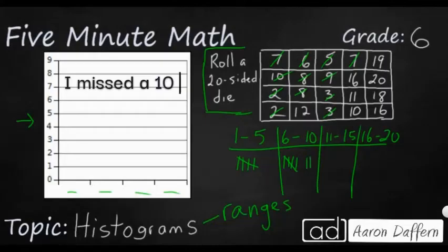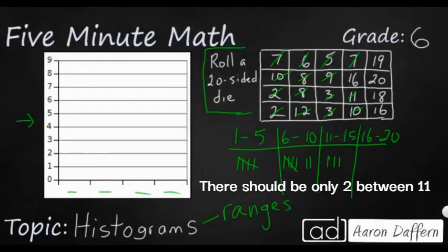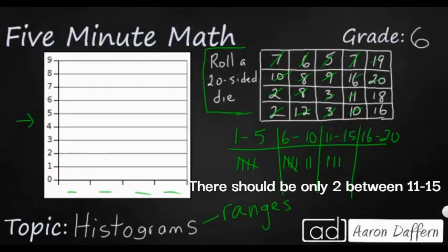Between 11 and 15? I've just got 1, 2, 3. It doesn't look like I've got that much. And finally, the rest will be 16 through 20. 1, 2, 3, 4, 5.